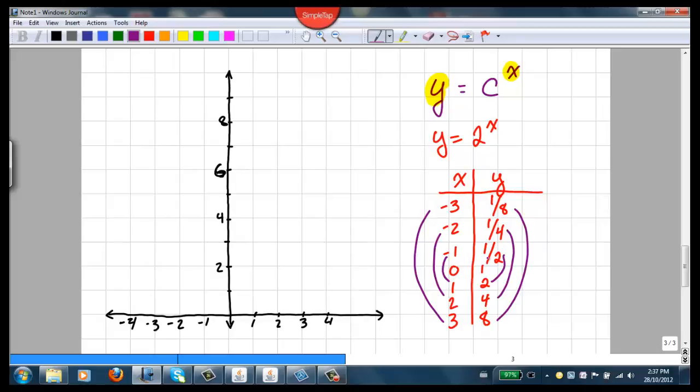So we can plot those points. Let's start with these positive ones here, 0, 1, 2, and 3. When x is 0, y is 1. When x is 1, y is 2. When x is 2, y is 4. And when x is 3, y is 8.